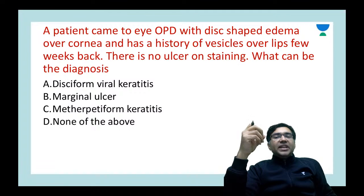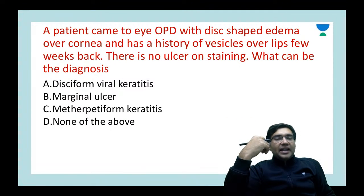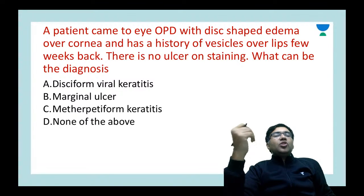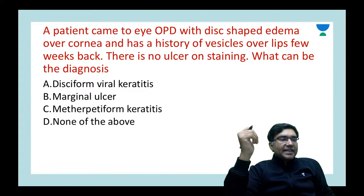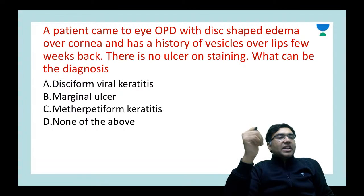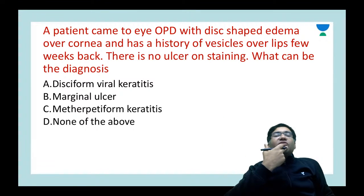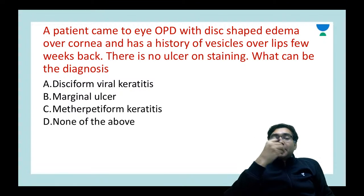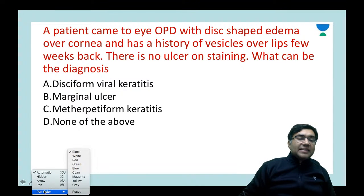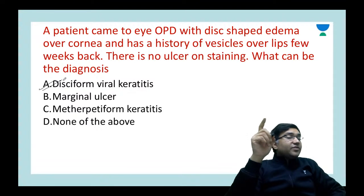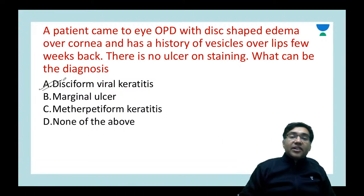A patient came to the OPD with disc-shaped edema over the cornea and a history of vesicles over the lips a few weeks ago. There is no ulcer on staining. The history suggests herpetic infection; disc-shaped edema with no epithelial involvement means epithelium is intact. The diagnosis is disciform viral keratitis. In disciform viral keratitis you can use steroids, and a very important feature is there is no ulcer on fluorescein staining.